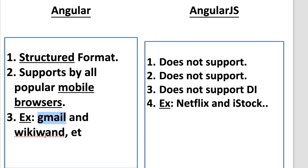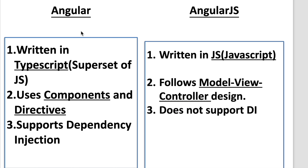Gmail and Wikivoyage are examples of Angular, while Netflix and iStock are examples of AngularJS. This covers some of the key differences between Angular and AngularJS.